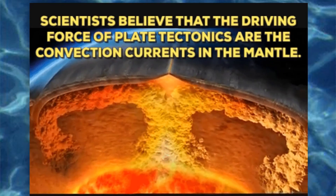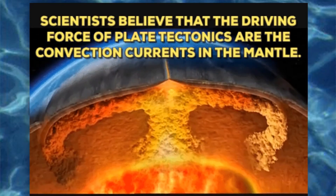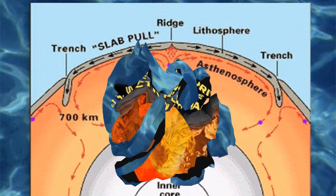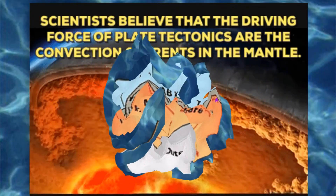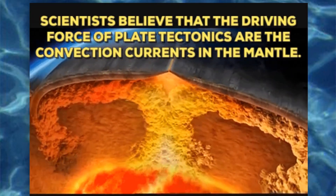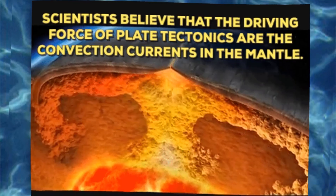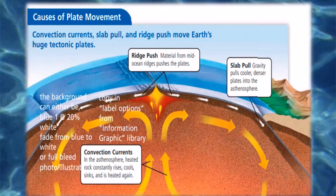Yet Wegener could not explain how the continents moved. Because of this, his critics called continental drift a fairy tale and rejected his hypothesis. The theory of plate tectonics explains how plates and their continents move. In the mid-1900s, scientists proved that tectonic plates move and offered explanations about how. Their work eventually led to the theory of plate tectonics, which built on some of Wegener's ideas.